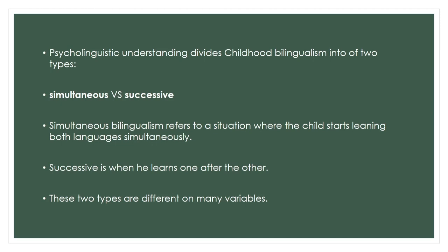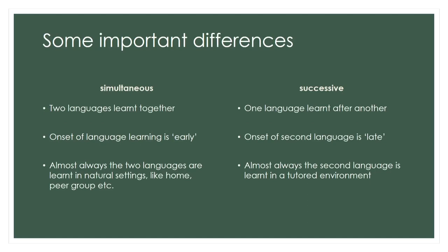To start at the very root of it, the first and foremost difference that psycholinguistics talks about in childhood bilingualism is the difference between simultaneous and successive bilingualism. Simultaneous bilingualism refers to a situation where the child learns both languages simultaneously, while successive bilingualism is when you learn one language in succession of another — one after another. Simultaneous is when you learn them together; successive is when you learn one after the other. These two types are different on many variables — it is not a simple distinction, and there are many other sub-differences.